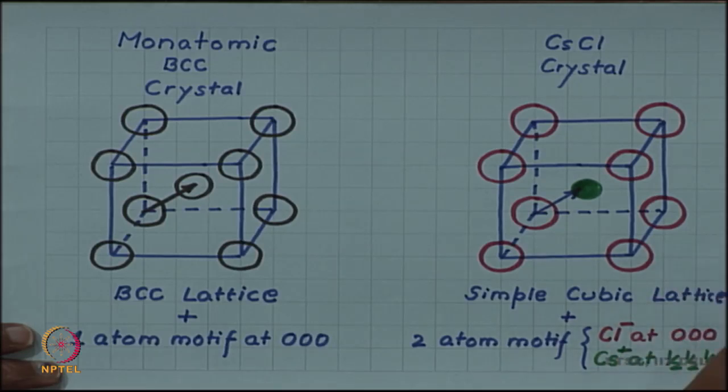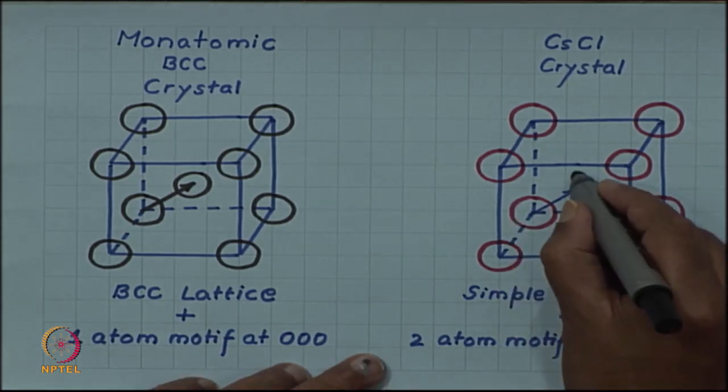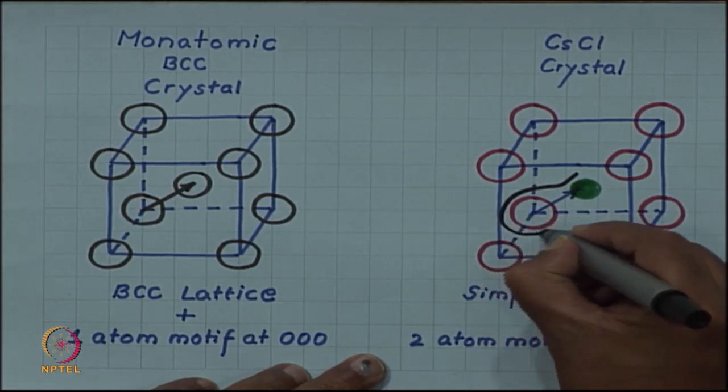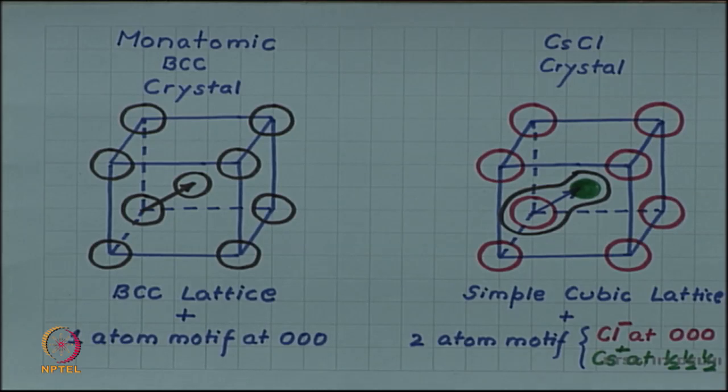The structure changes, the lattice changes. Instead of BCC lattice, we have a simple cubic lattice and we will have to select two atoms as a motif: a chloride ion sitting at the lattice point with a caesium ion shifted by half, half, half, as we have seen.